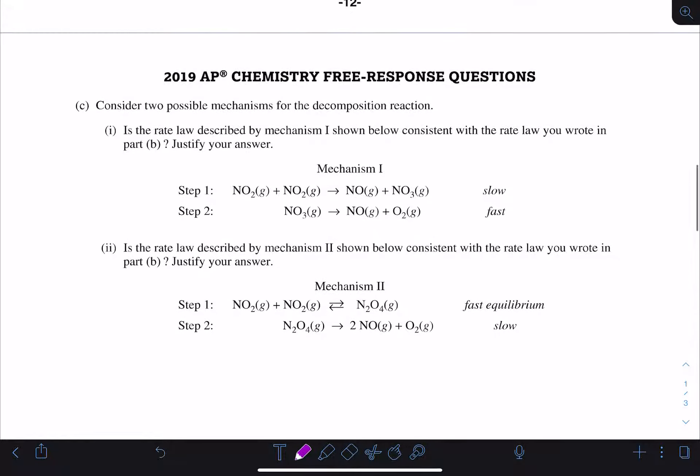Part C now gives us two possible mechanisms for the decomposition reaction, and we're asked to determine if each of these mechanisms is consistent with the rate law that we wrote in Part B and to justify our answer. Looking at mechanism 1, we see that step 1 is our slow step, and our slow step, also known as our rate limiting step, is going to be the one that dictates the rate law for our reaction as a whole.